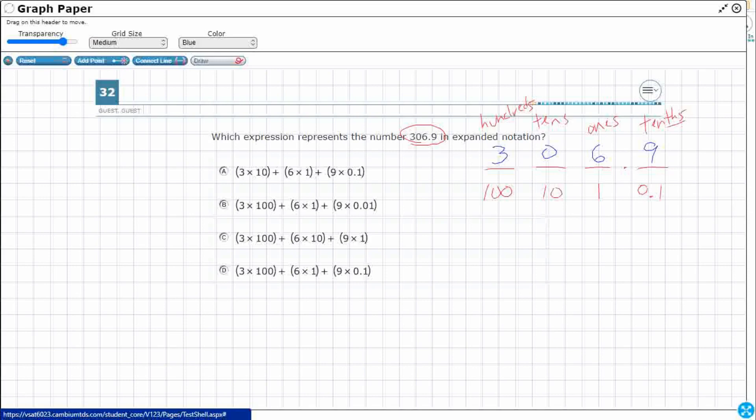Well, you always start with your largest place value. So in this case, it's 3 in the hundreds spot. But you notice I already wrote 100 underneath there. So you multiply the value that's there, 3, by its actual place value. So 3 times 100.